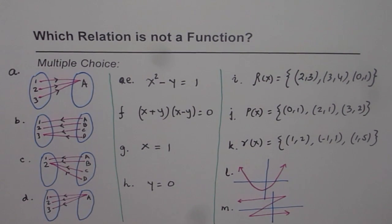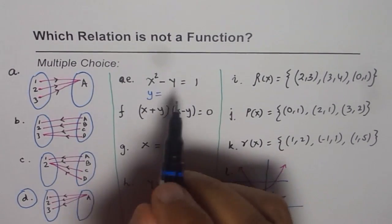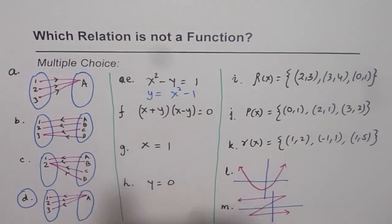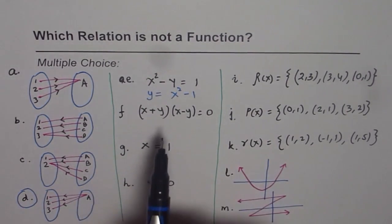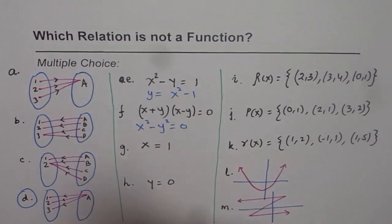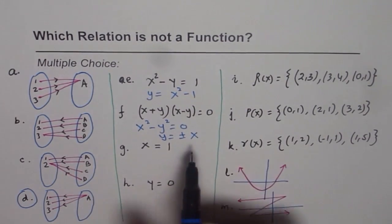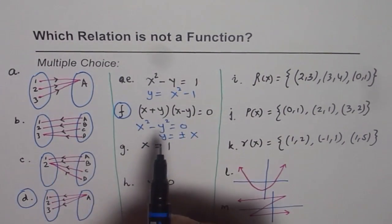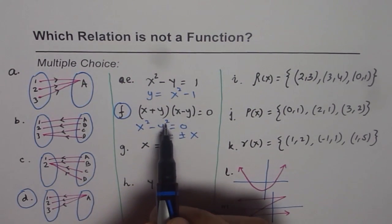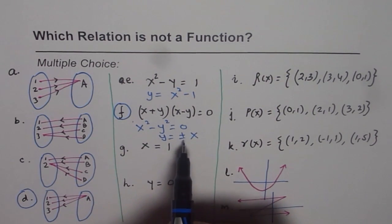For the equations, we can write y = x² − 1, which gives a unique output, so it is a function. For (x + y)(x − y) = 0, expanding gives x² − y² = 0, so y² = x², meaning y = ±x. Since taking the square root gives plus and minus, this is not a function.